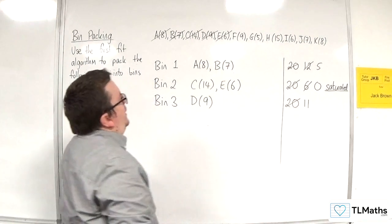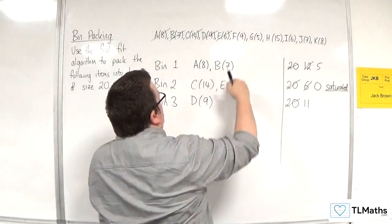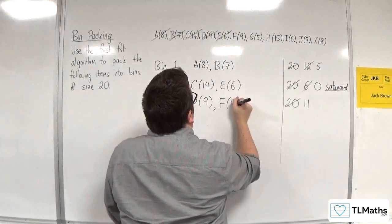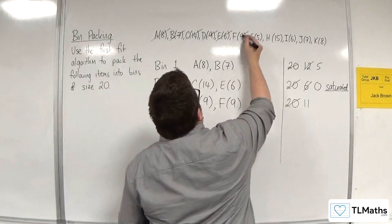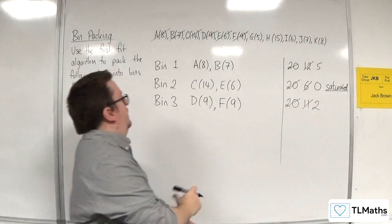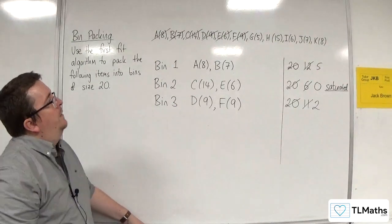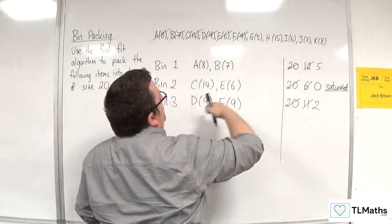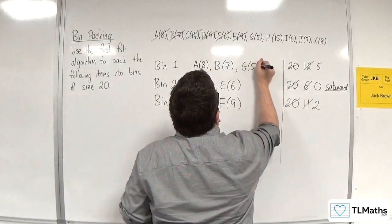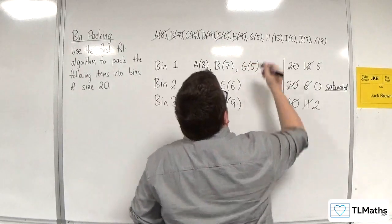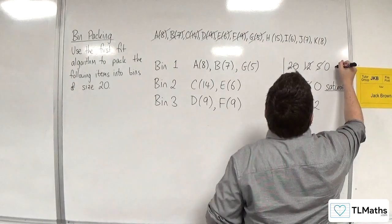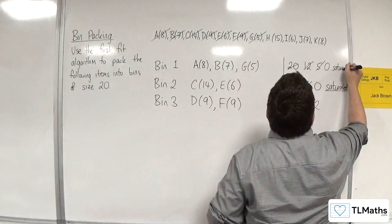F comes along next. That's size nine. It can't go into bin one, but it can go into bin three. So F nine is going into bin three — I'm now down to two left for bin three. Then G comes along. G can fit into bin one, so G is going into bin one. I'm now down to zero, and bin one is also saturated.